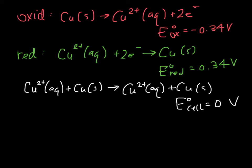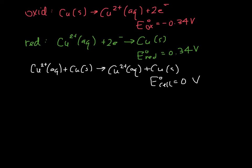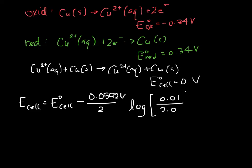Now, if we instead calculate the actual cell potential by using the Nernst equation, we get the following. So now we have the difference in concentrations here, and we find this has a voltage of 0.068 volts.